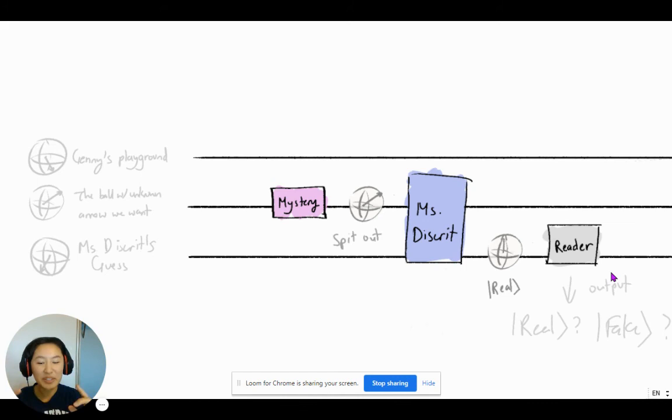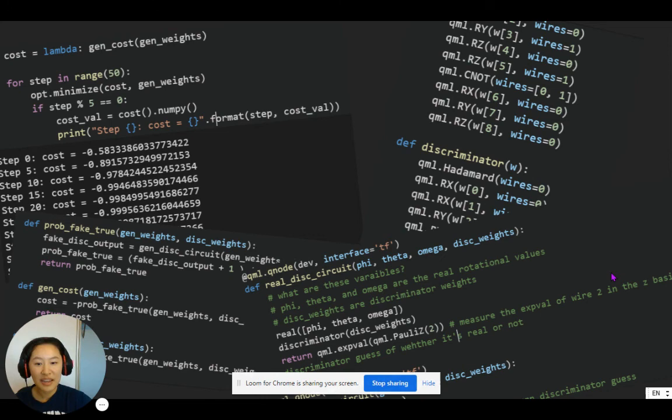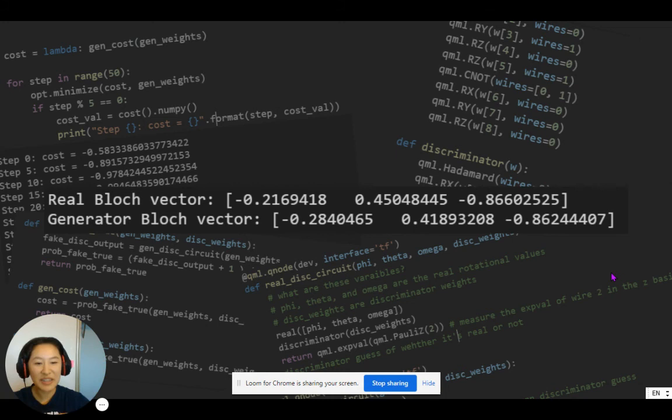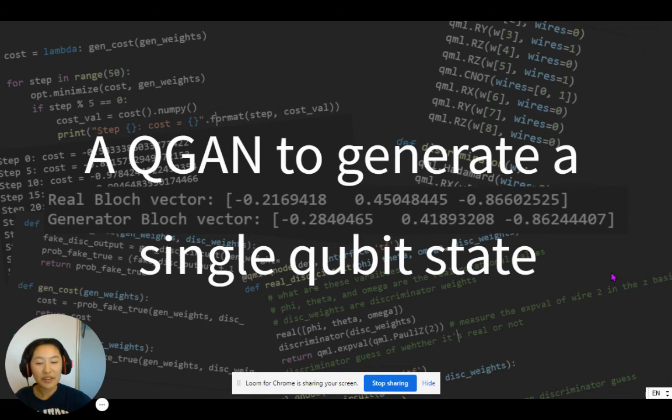But what's important is that now, Jennie can spit out a ball that is equal to the mystery ball every time. And I have ran this code. And this is my result. You can see that the generated arrow coordinates are equal, are mimicking the real arrow coordinates, even though Jennie has no idea what the real coordinates are. And this is the power of quantum generative neural networks, and generative adversarial neural networks.